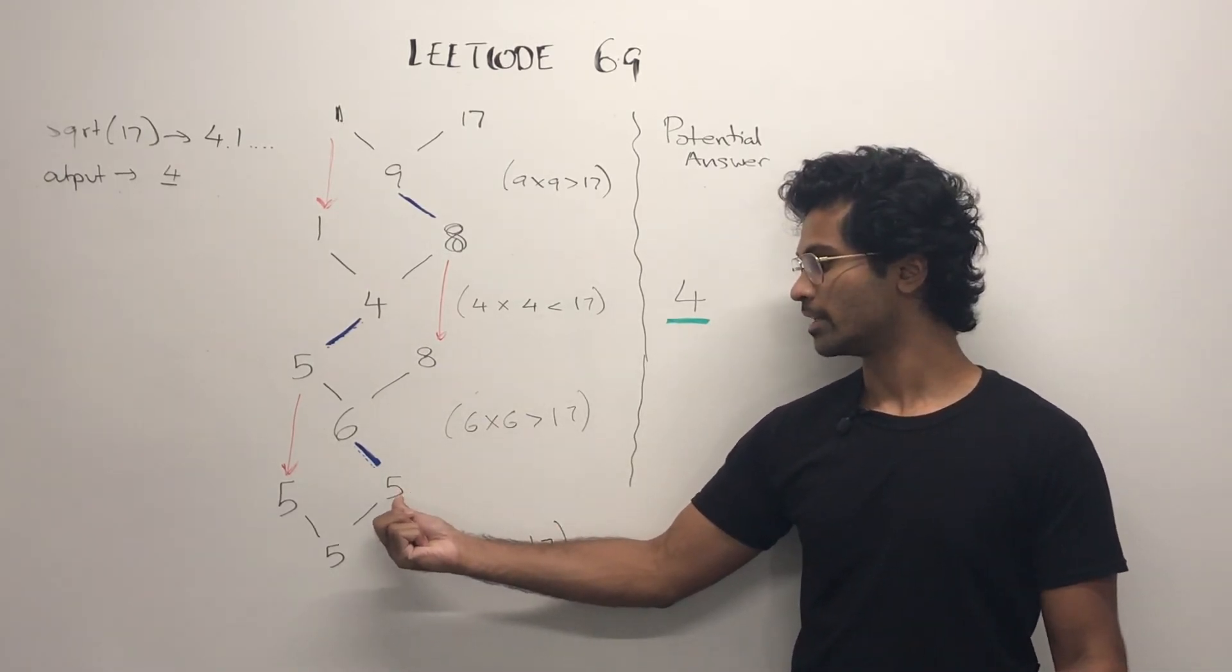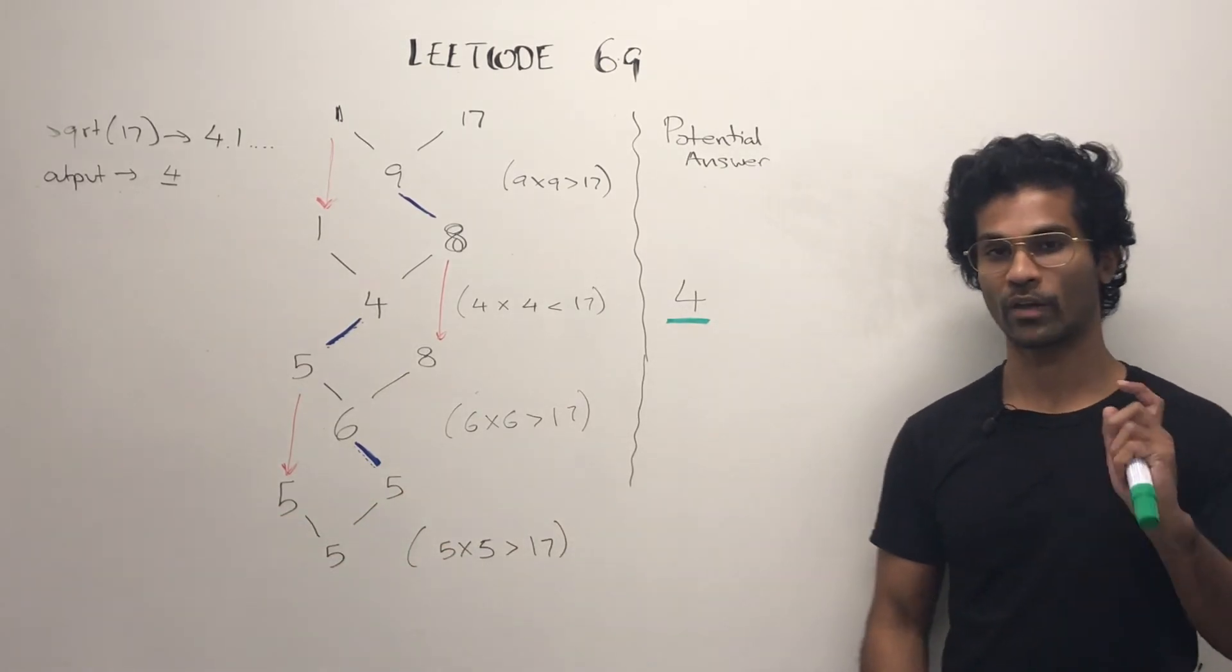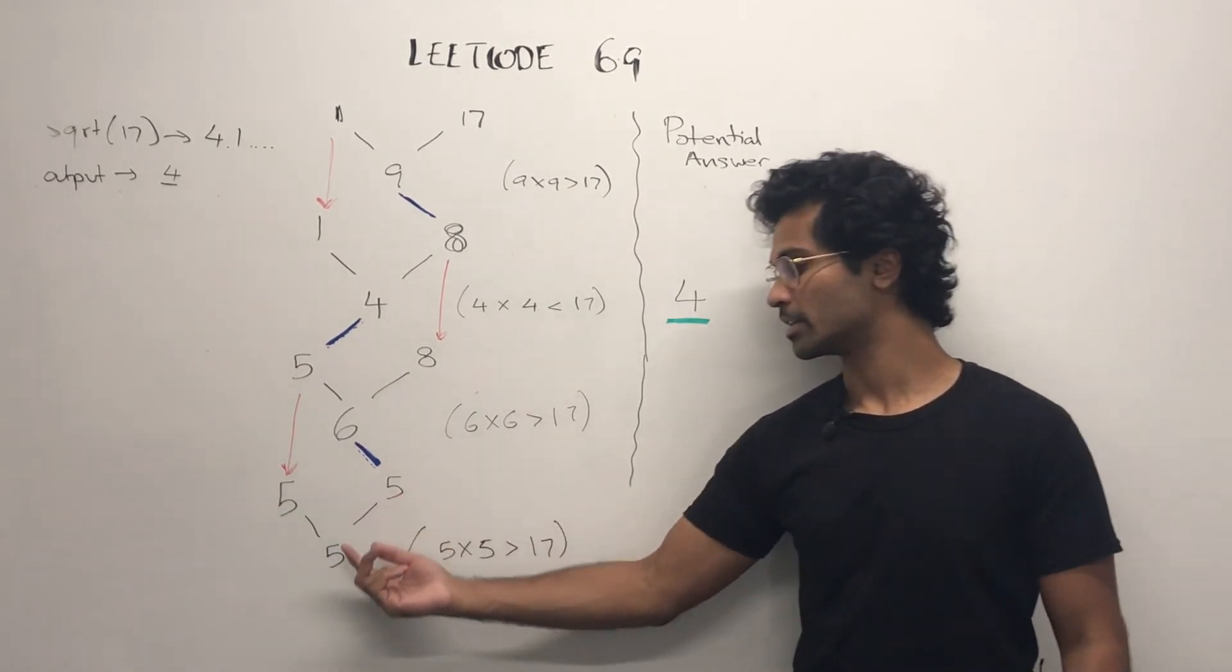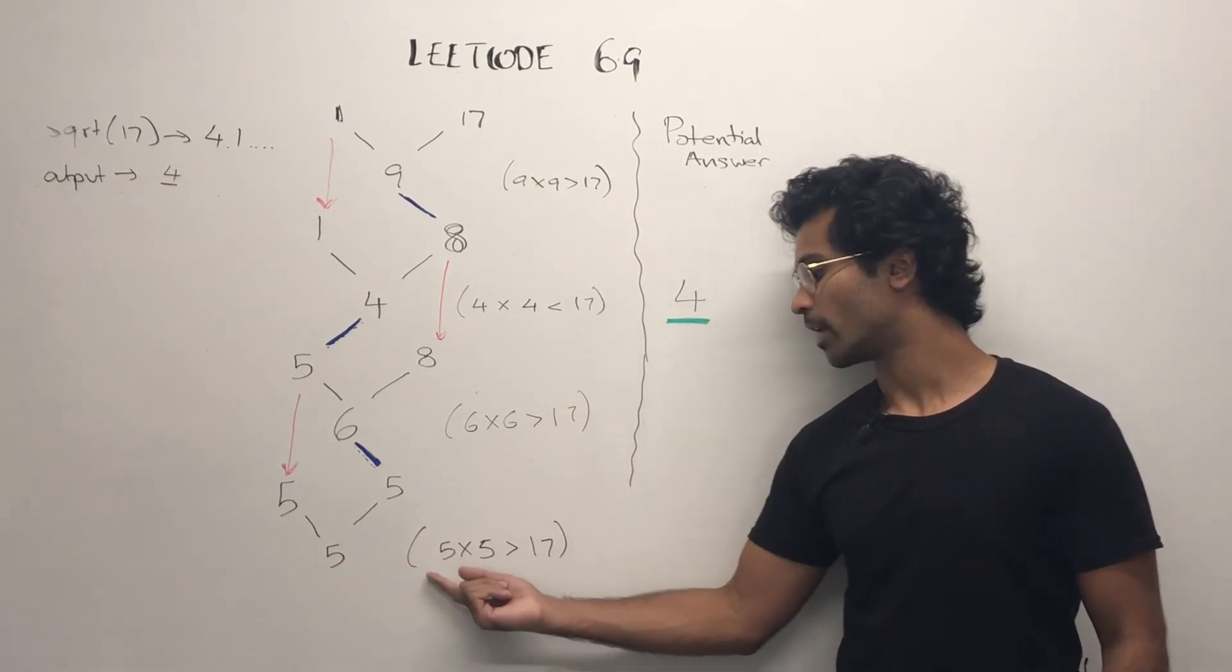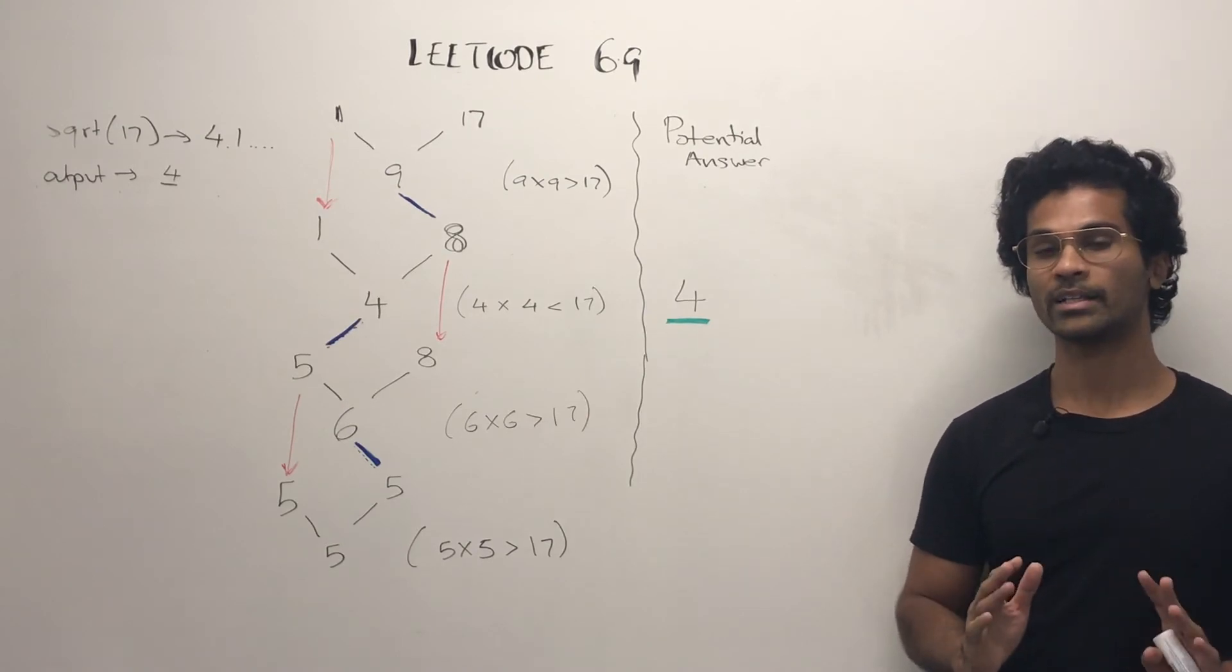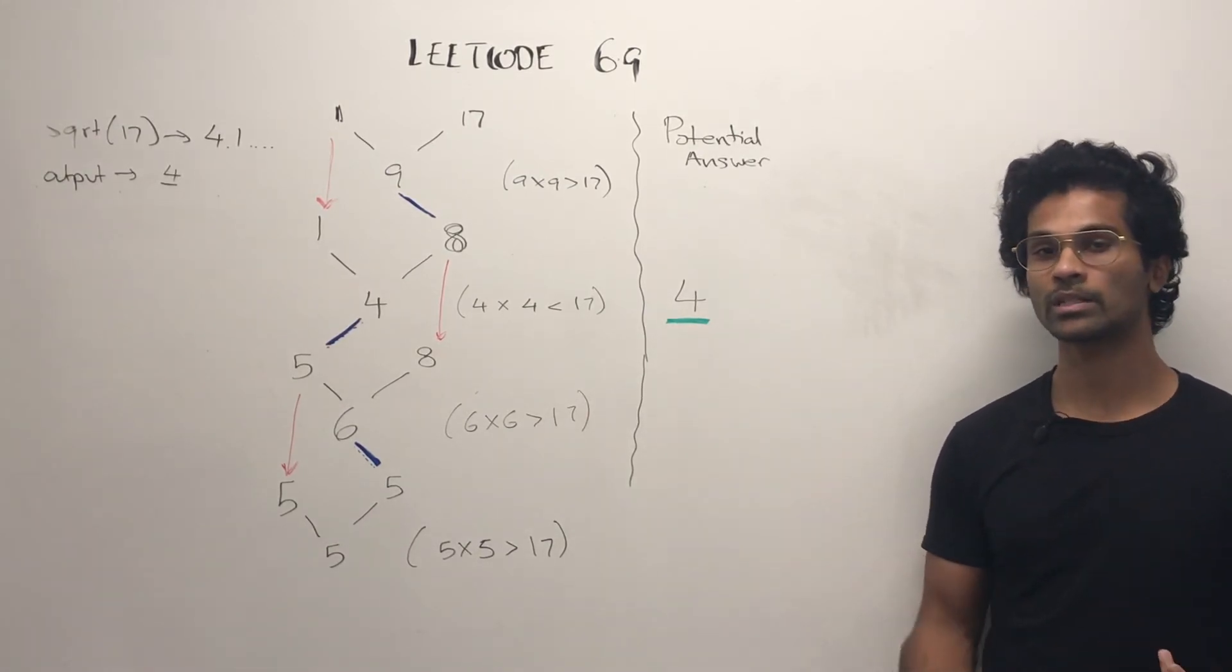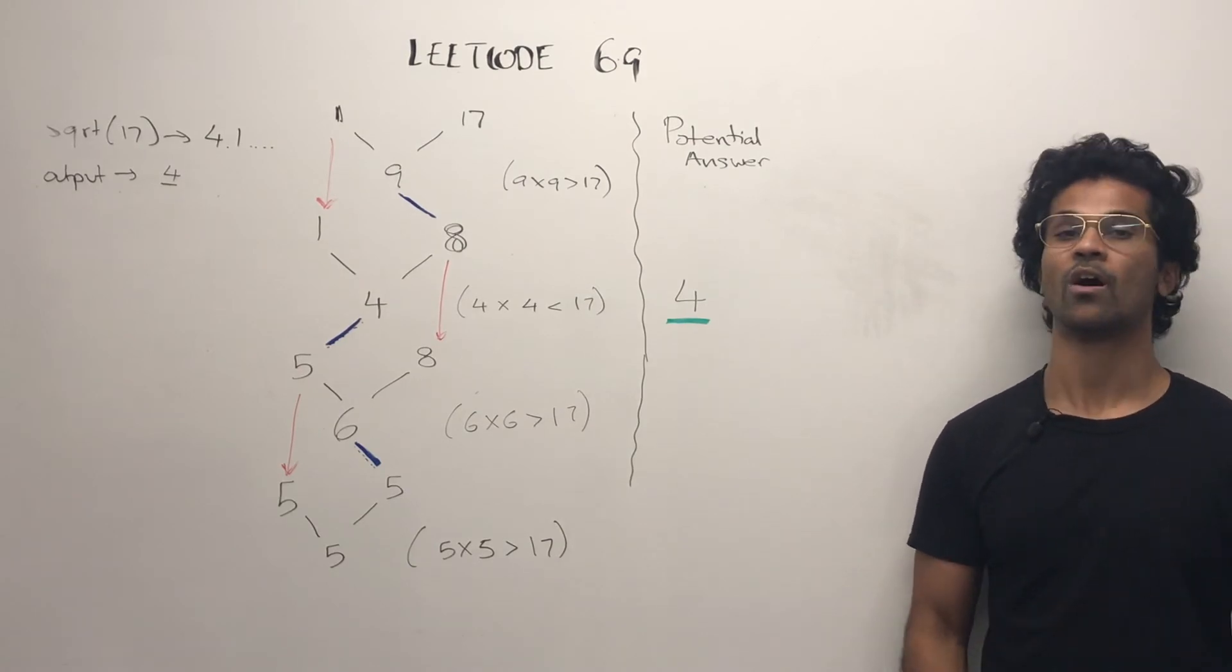We swap out the upper limit because the guess is too high. And then we see that, okay, 5 is the upper limit and 5 is also the lower limit. So we have one more iteration. The midpoint is going to be 5. And after we see 5 times 5 is greater than 17, we say that we can't do better than 4. 4 is the best potential answer we've got, so that's our final answer.